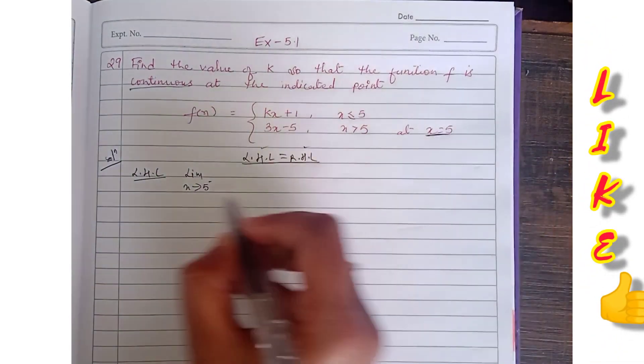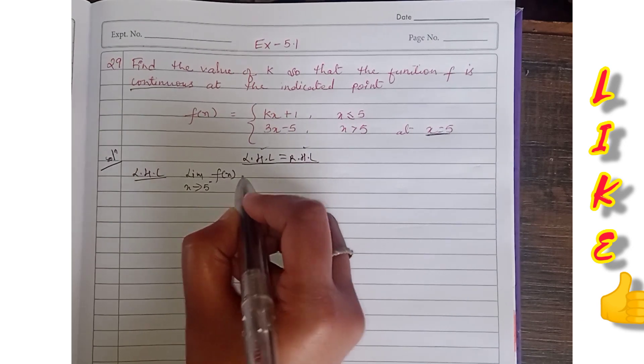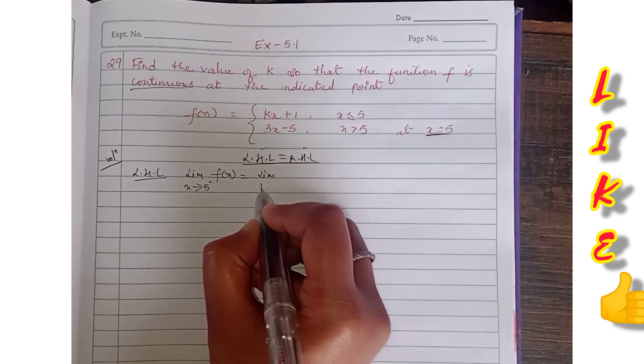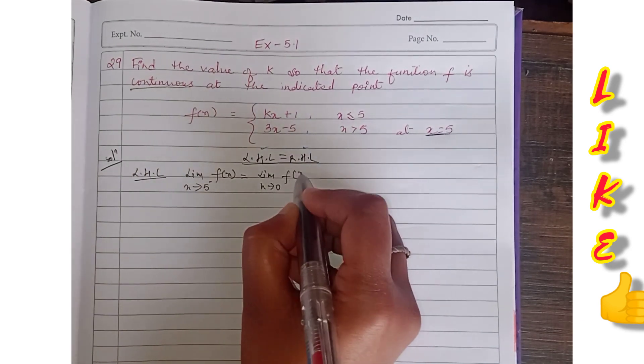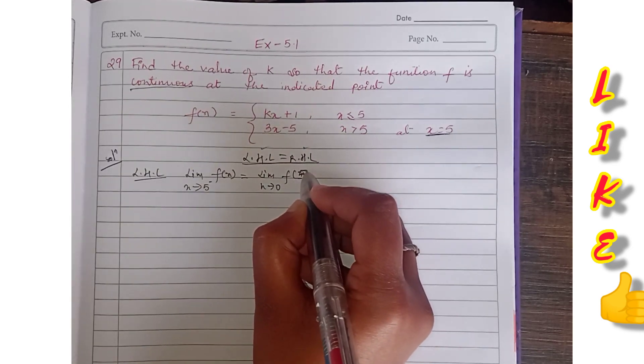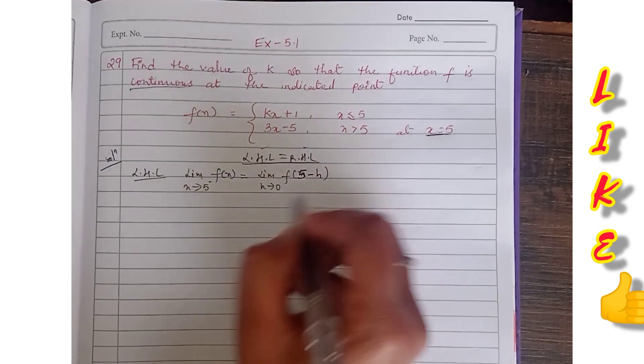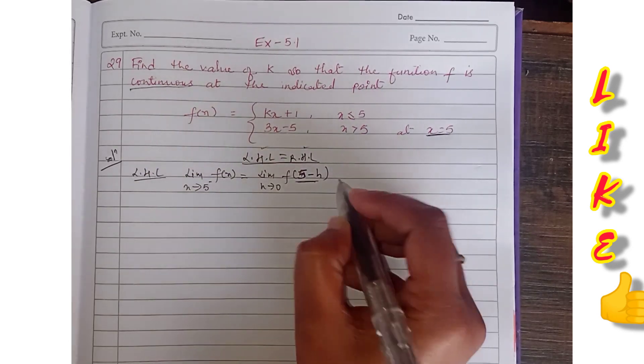So x where we have to use this - now 5 minus, this means left hand limit, x less than 5. So kx plus 1. Limit h tends to 0.